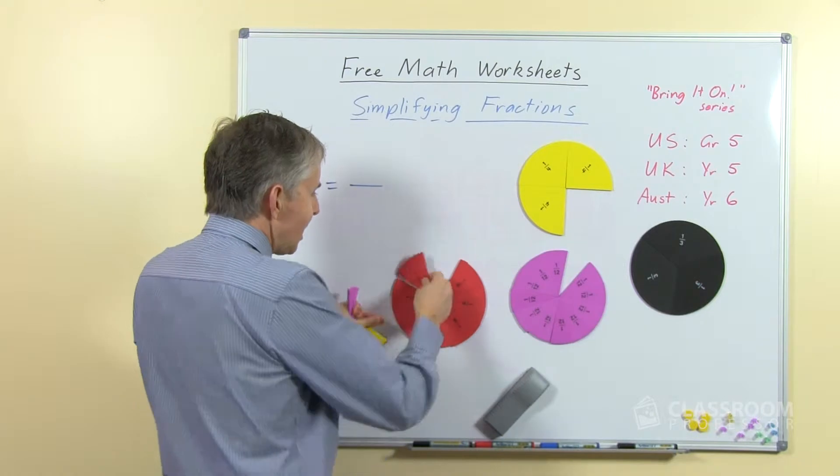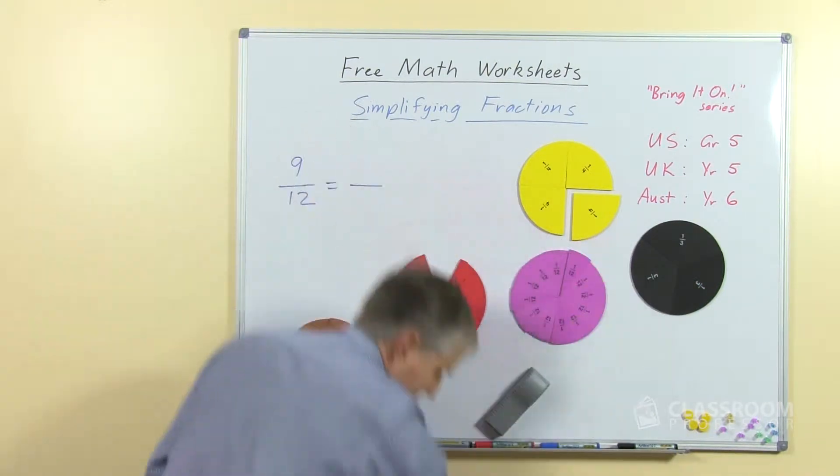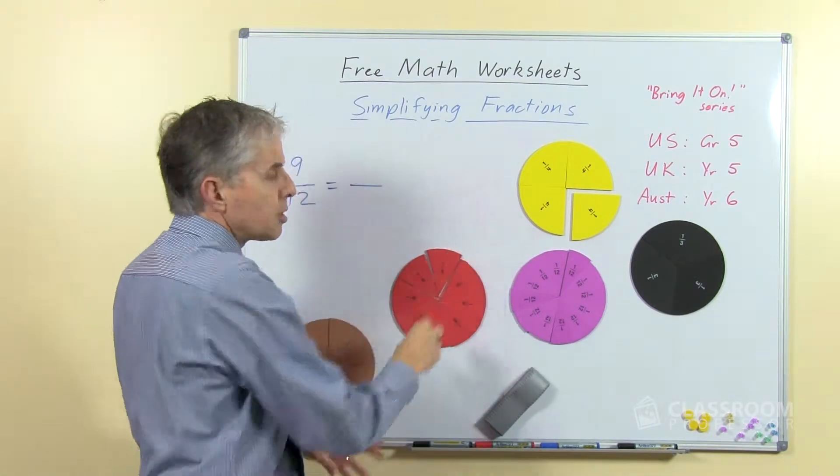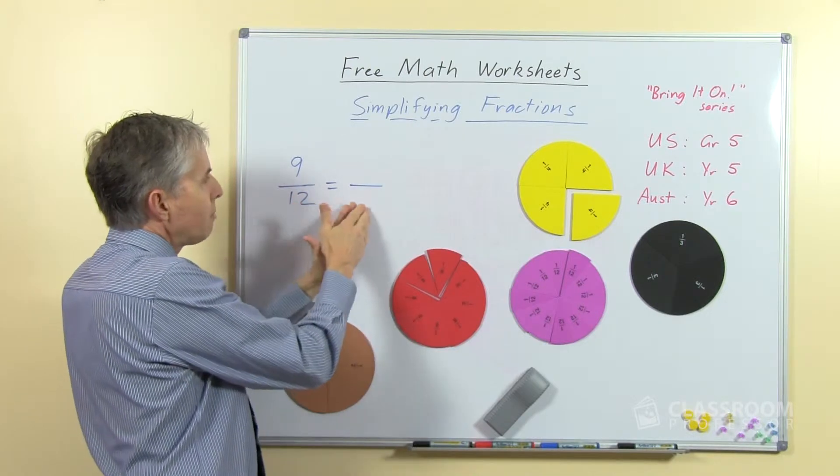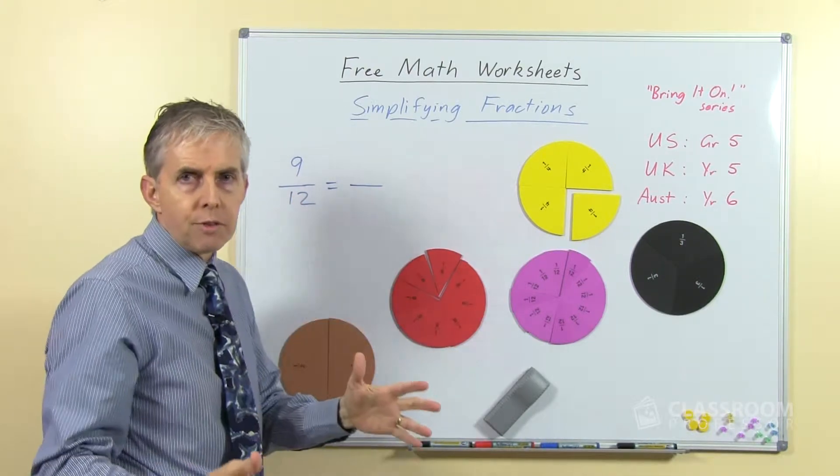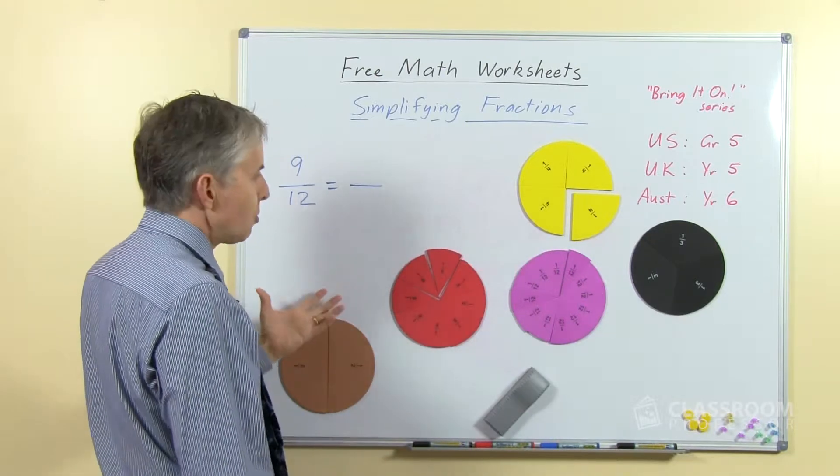So with that said, in this context, we want our students to find a fraction that uses smaller numbers. So we have nine twelfths, we're trying to make a new fraction, an equivalent fraction, an equal fraction, that uses smaller numbers.